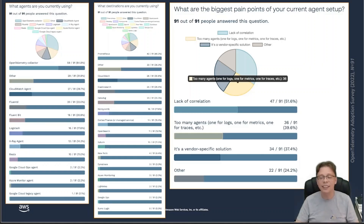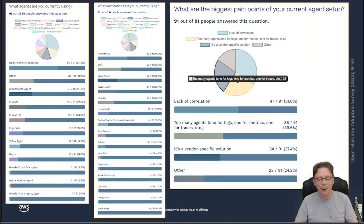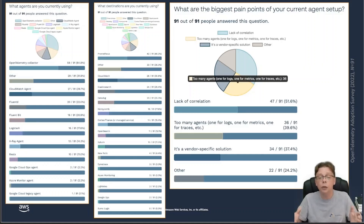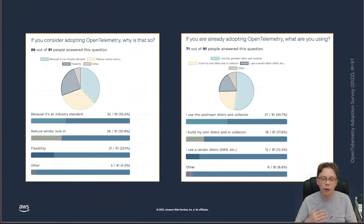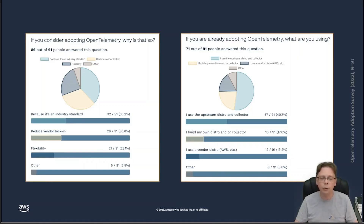Most interestingly, what I want to point your attention to is: what are the biggest pain points of your current agent setup? Interestingly, lack of correlation — with half of the respondents — is indeed the number one pain point, which is a perfect fit for OpenTelemetry. This is followed by too many agents — obviously a key value proposition of OpenTelemetry is consolidation, having one agent rather than multiple. Asking about motivations for adopting OpenTelemetry, both 'industry standard' and 'to reduce vendor lock-in' are pretty much the two main reasons.